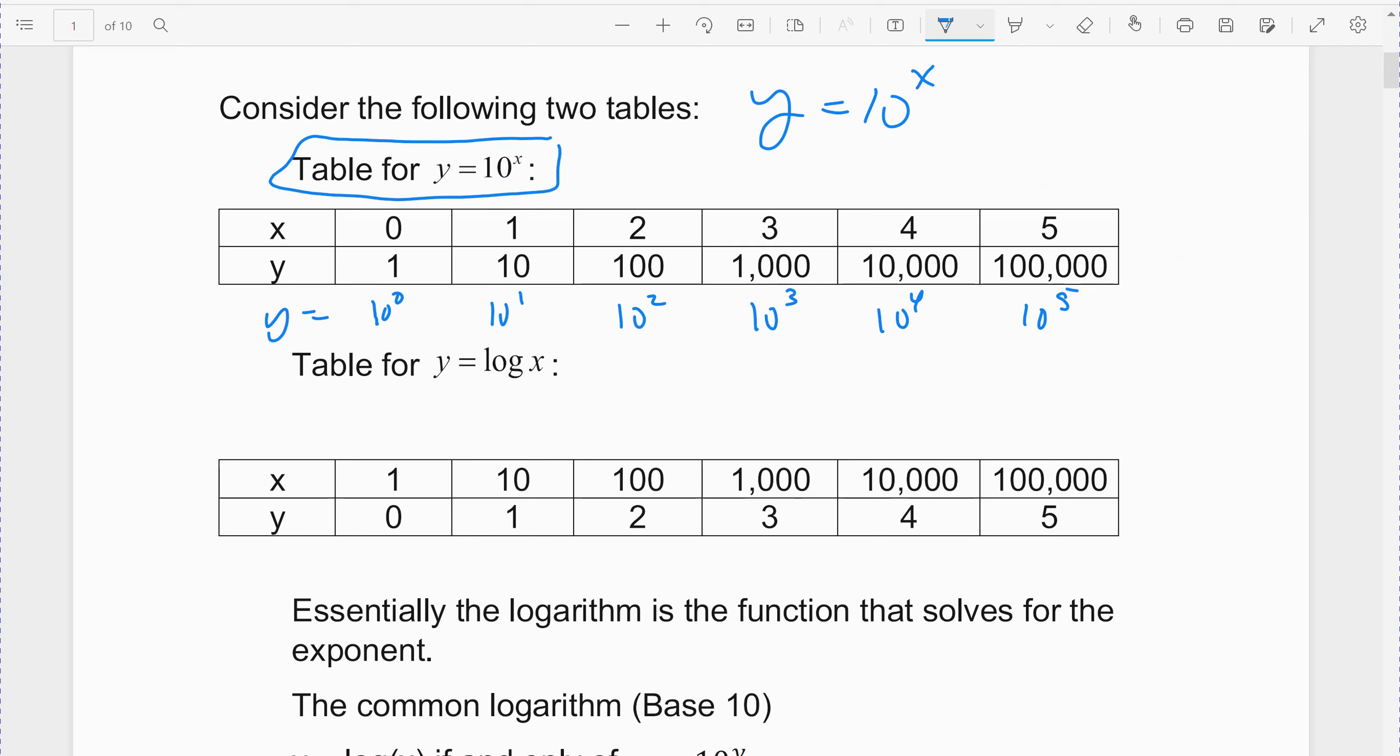In a logarithm that's just written log, all your scientific calculators should have a log key. The log key means base 10. This is true if x equals 10 raised to the y. We've taken the exponential equation and flipped the x and the y, switched places of the x and the y. So this allows us to solve for the exponent. The y represents the exponent. X is the exponent in the original. We flipped it; y is the exponent in the logarithm.